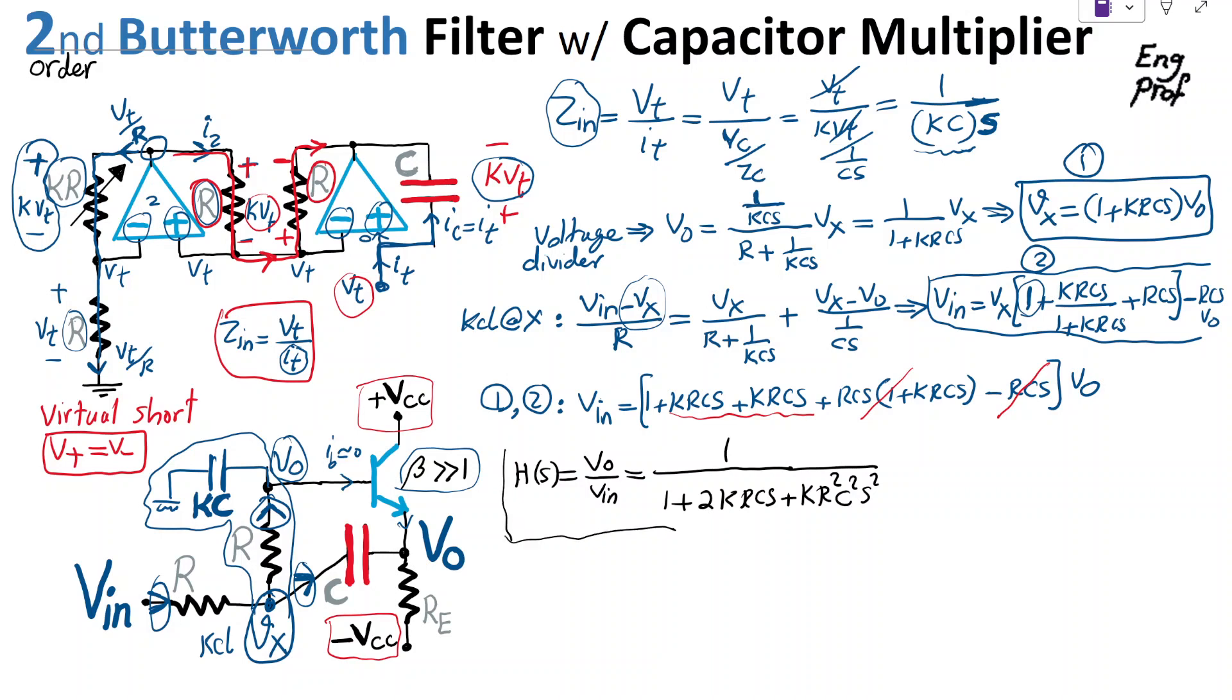We got to this transfer function, voltage transfer function for this circuit that shows we have a second-order polynomial in the denominator, and it can implement a second-order filter. Now, if we want to find this as a Butterworth filter, we need to set K properly. So let's set K equal to 0.5.